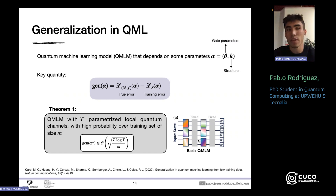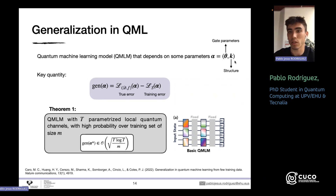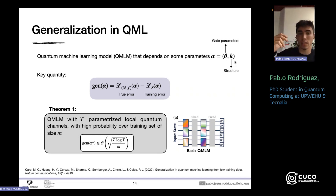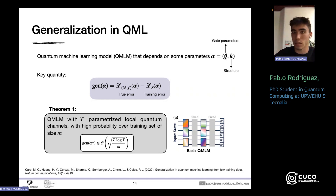The first paper: 'Generalization in quantum machine learning from few training data.' They consider a QML model depending on two types of parameters: gate parameters — rotation angles to optimize — and structural parameters k, a discrete number where k=1 gives one ansatz and k=2 gives another. So k changes the circuit structure while the gate parameters change within that structure. This is more general than fixing one ansatz and only varying gate parameters.